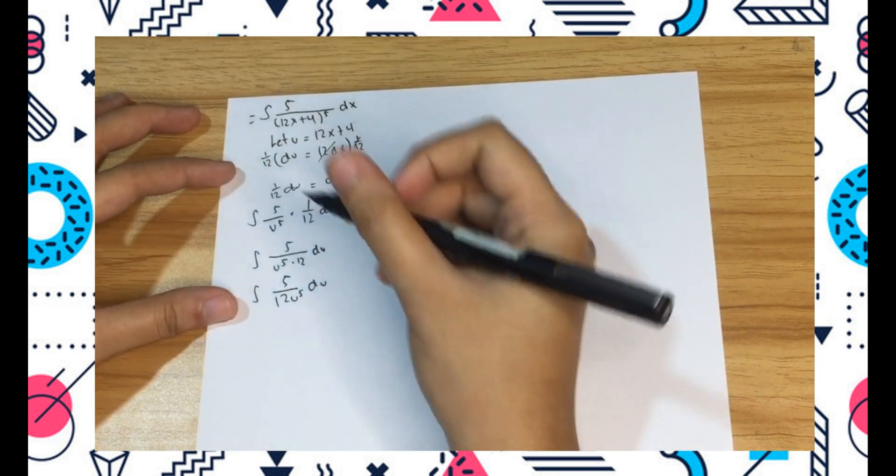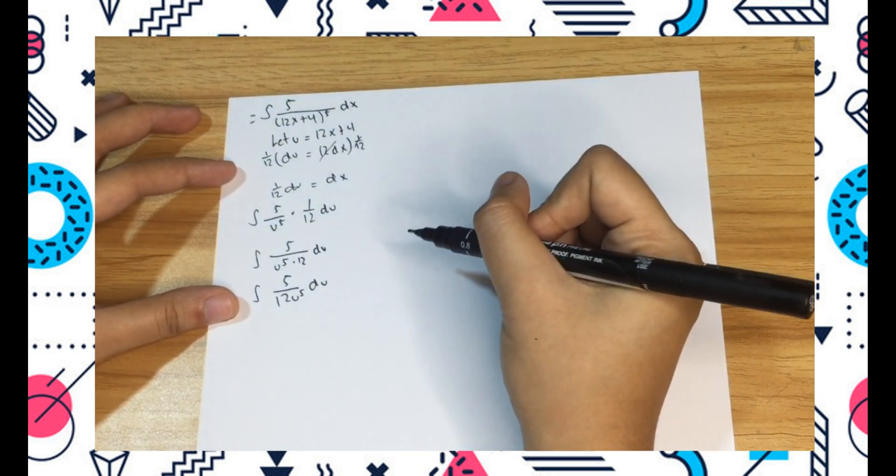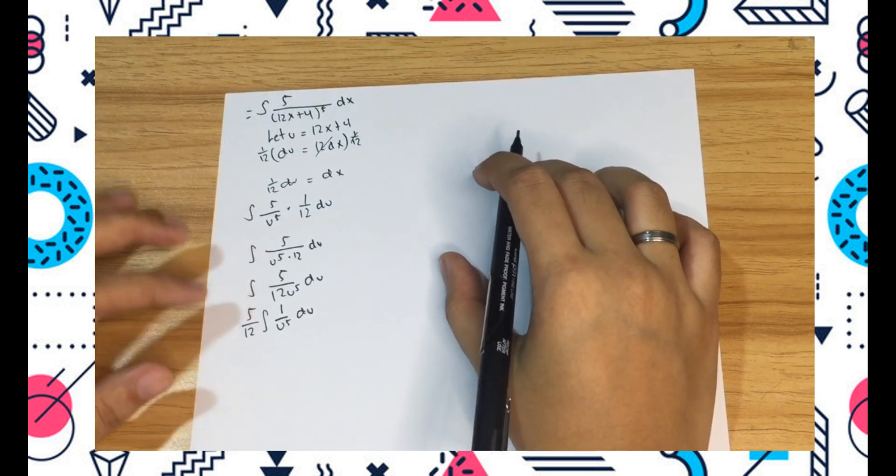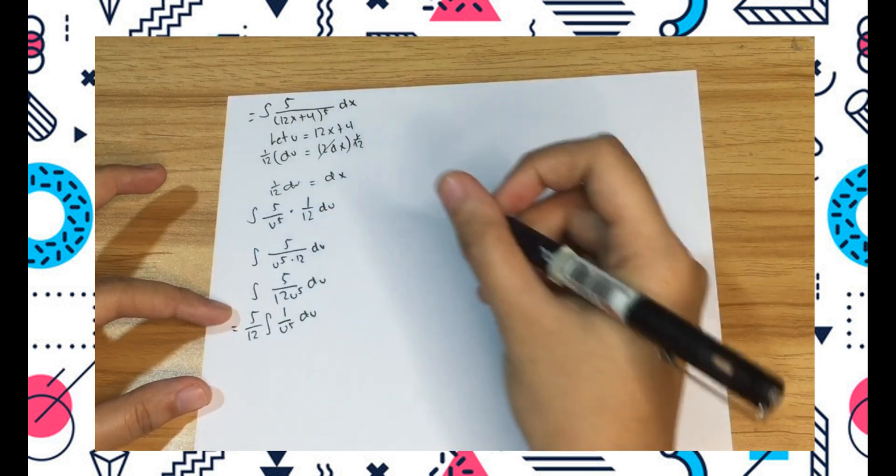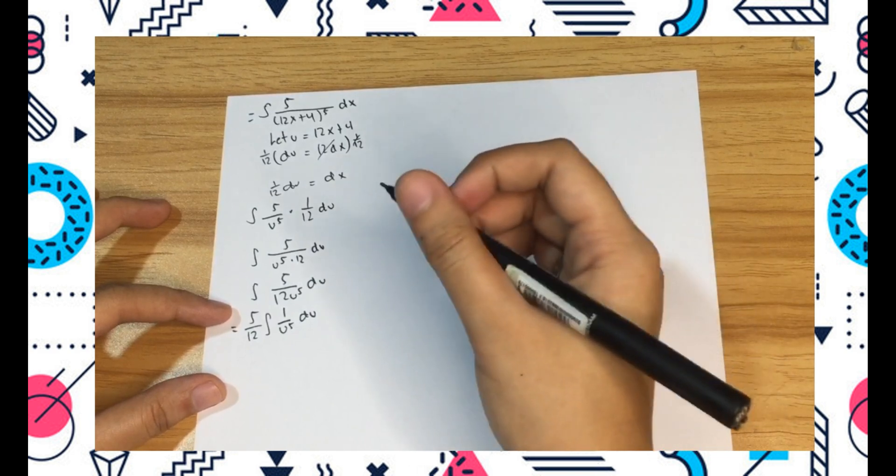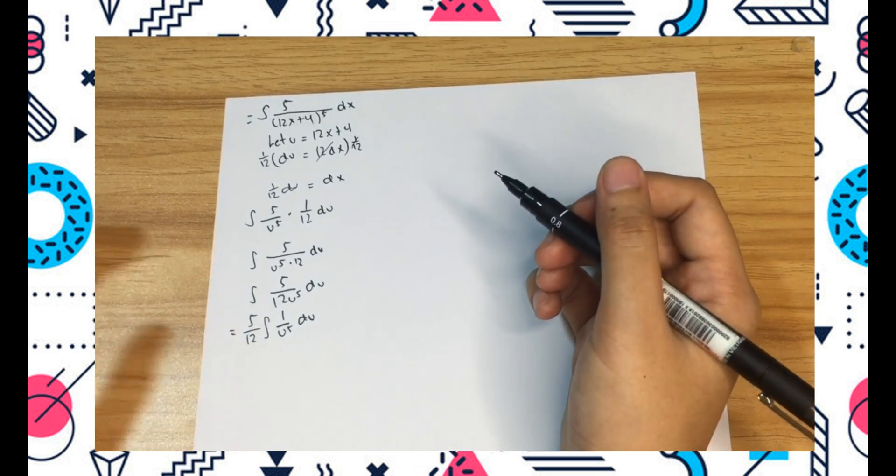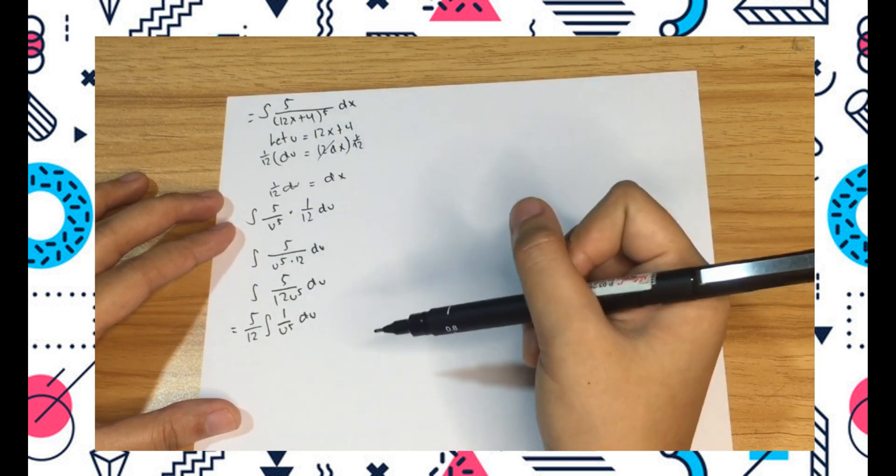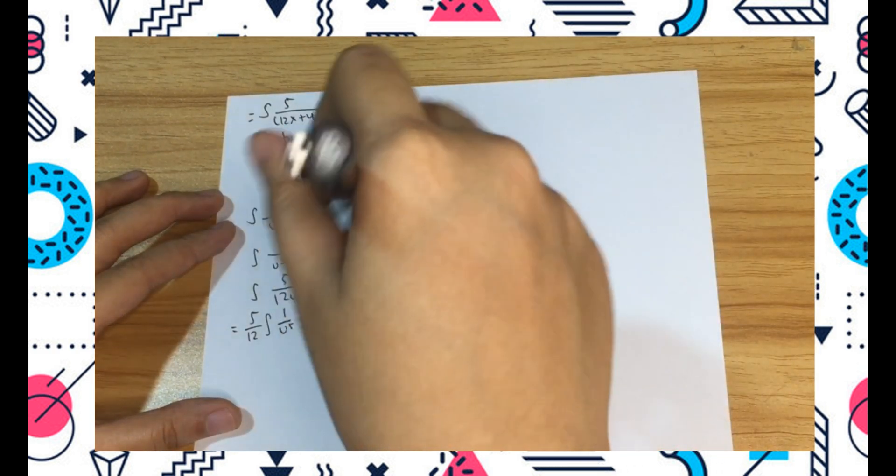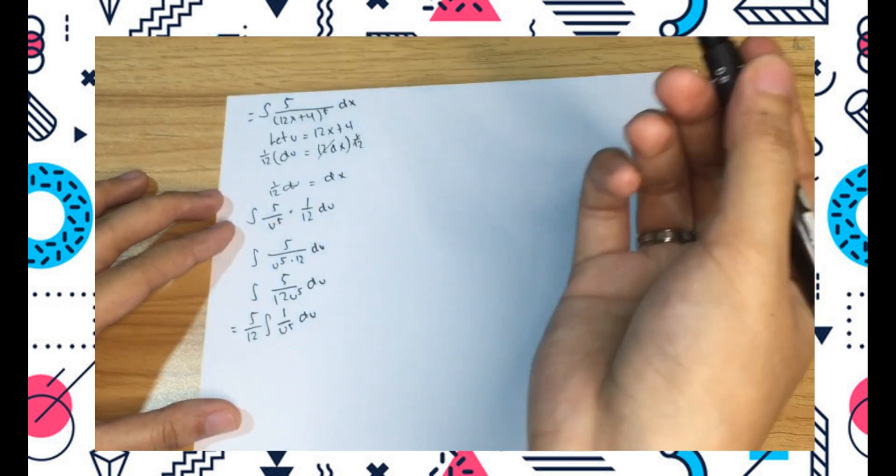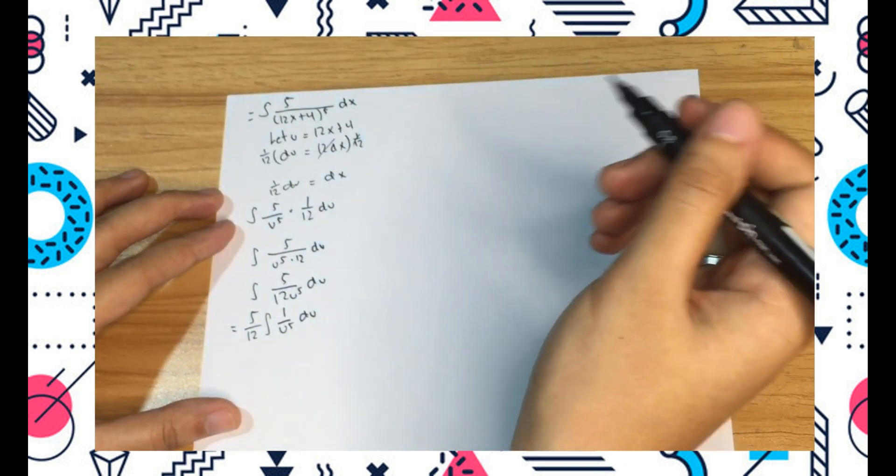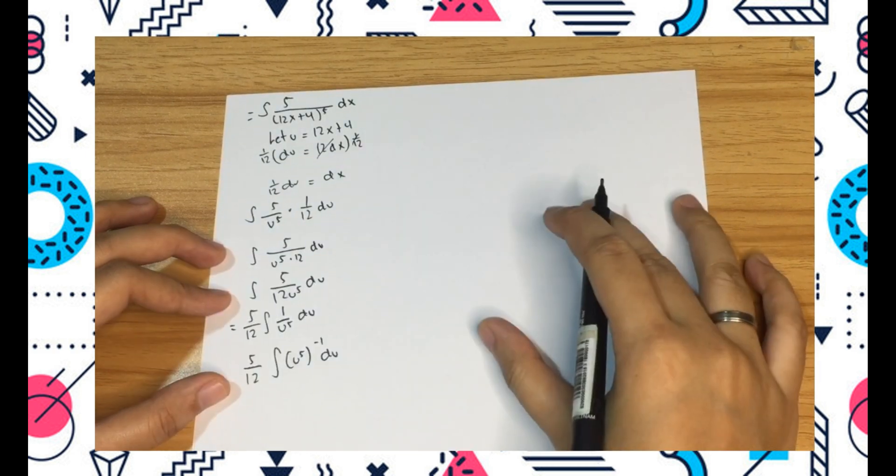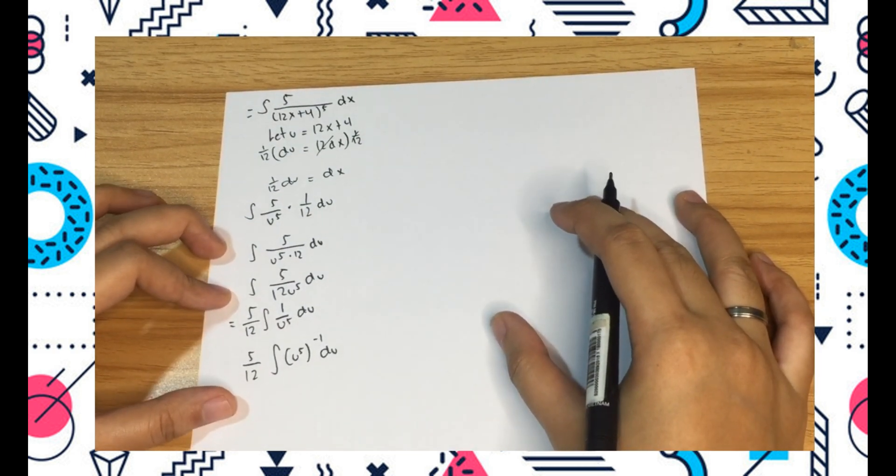Move the 12 to the left of u raised to 5 over du. Since 5 over 12 is constant, move it out of the integral. Move u raised to 5 out of the denominator by raising it to the negative 1 power. That's the basic rule.